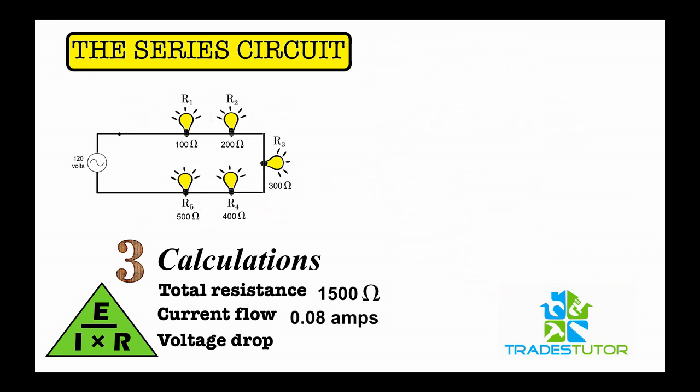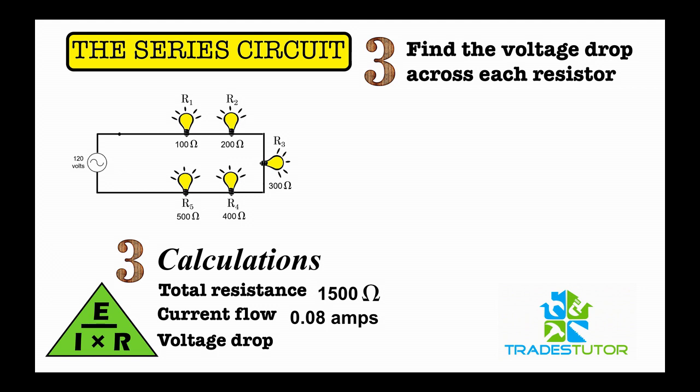Now what we're going to do, the third thing is the voltage drop across each resistor. We'll start with resistor one. So once again, back to Ohm's Law. And we don't have to rearrange this because we're trying to find voltage. So we're trying to find E. Plug the numbers in. The 0.08 is the current. The 100 is the Ohms, and we get 8 volts. But what does that mean? What is 8 volts? What are they talking about here?